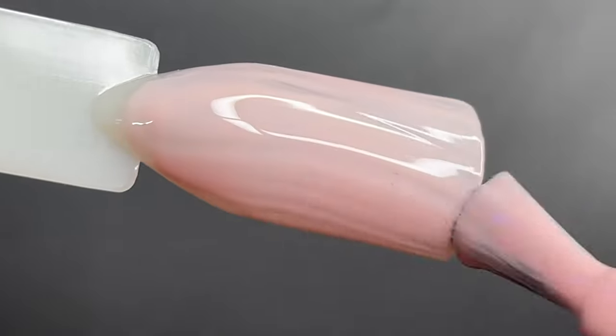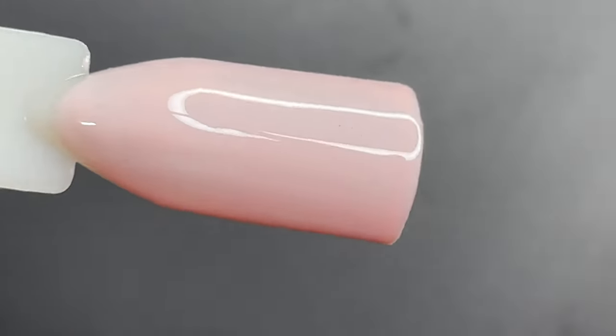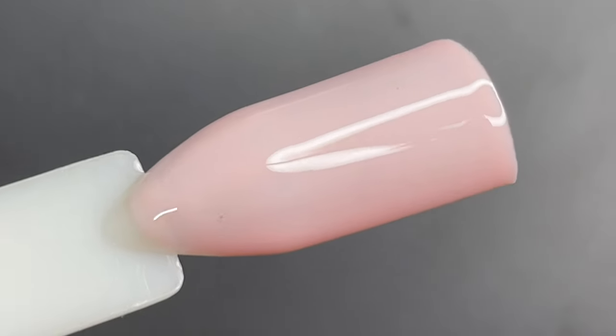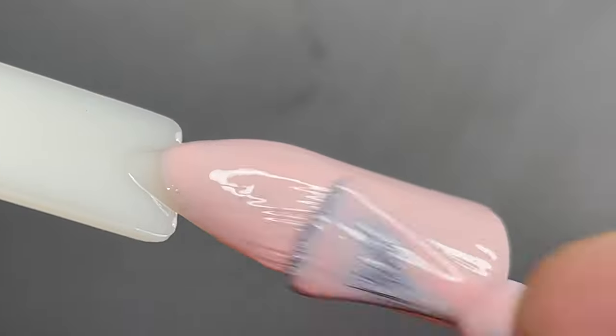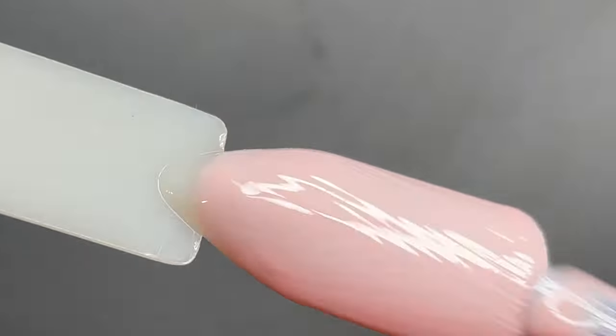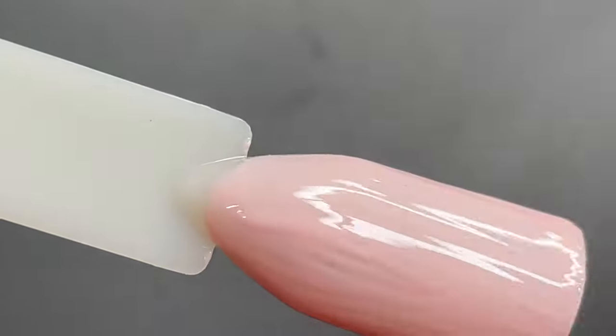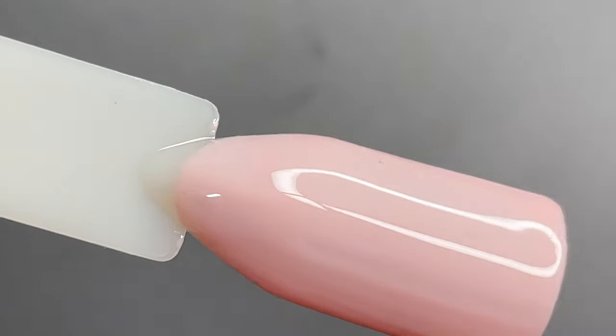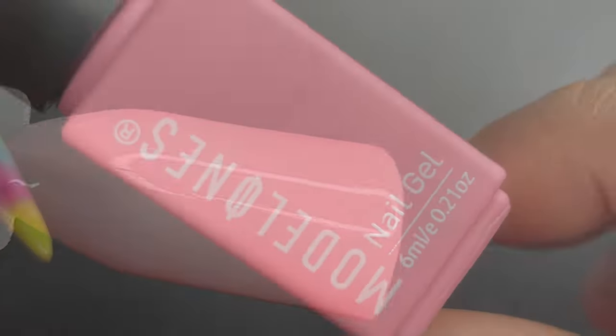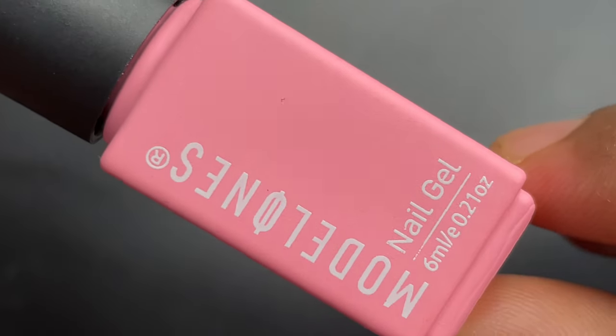So if you are looking for gel polishes, poly gel, acrylic powders, or anything that is related to nail art or nail extensions, you can check out Model Ones website. They have a really nice collection, and the best part is their quality is great and their pricing is also pocket-friendly, so you can buy it.